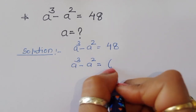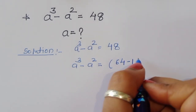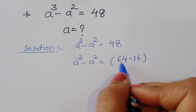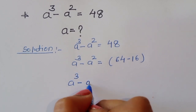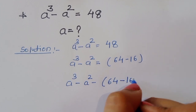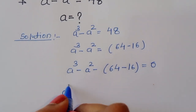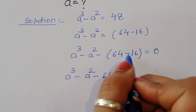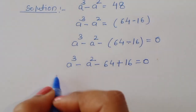Now we can rewrite 48 as 64 minus 16, which is 4³ minus 4². So 4³ = 64 and 4² = 16. Therefore, a³ - a² - (64 - 16) = 0.